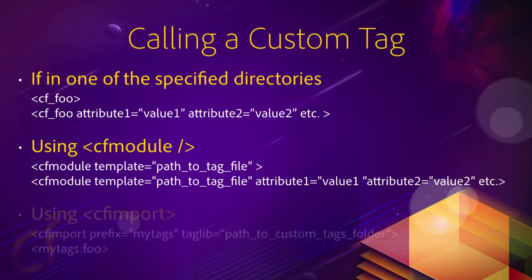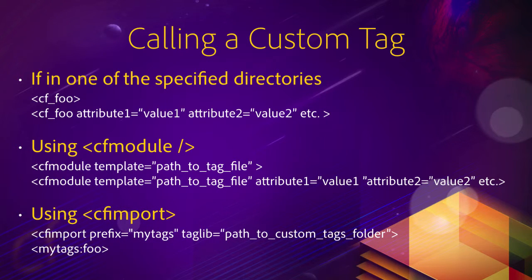Another way to call a custom tag is to use the cfimport tag of ColdFusion. In that case, you will use cfimport at the top of the ColdFusion page, and you will specify a prefix and a taglib. The taglib is a directory of your application that contains your custom tags. To use the custom tags stored in that directory, you use the prefix — for example, 'mytags' — followed by a colon, followed by the name of the custom tag you want to call. So 'mytags:foo' would call the foo.cfm page that is in the taglib directory specified in the taglib attribute of the cfimport tag.